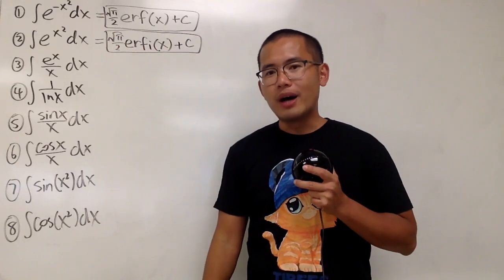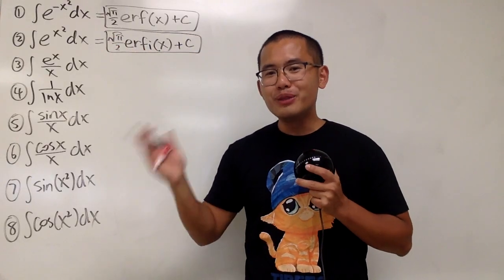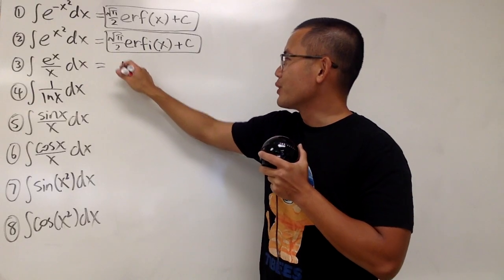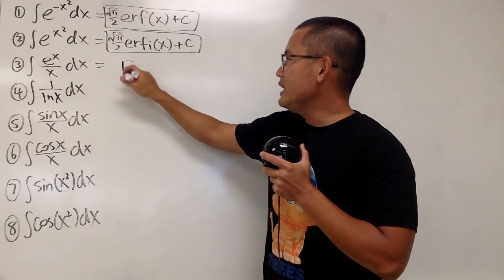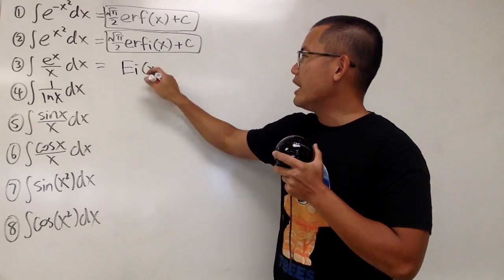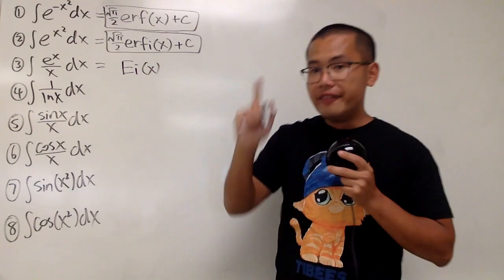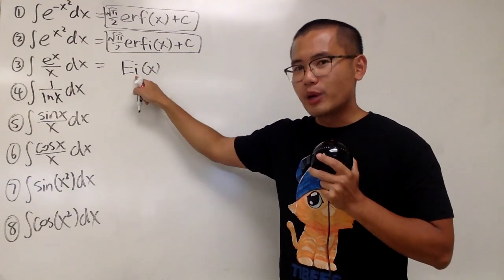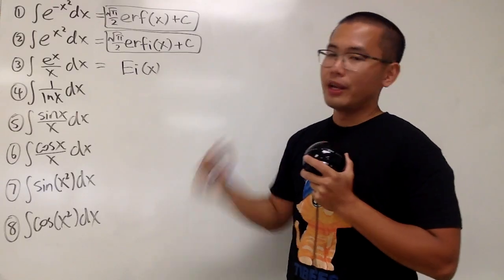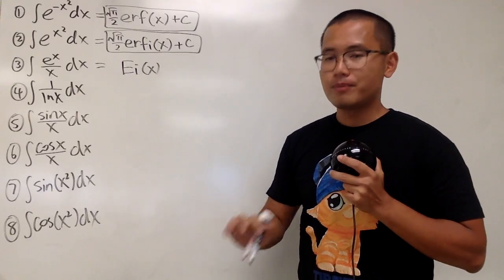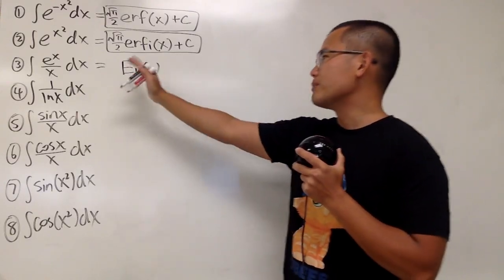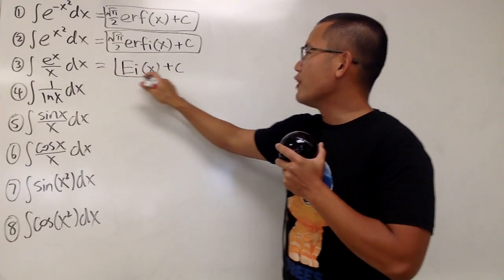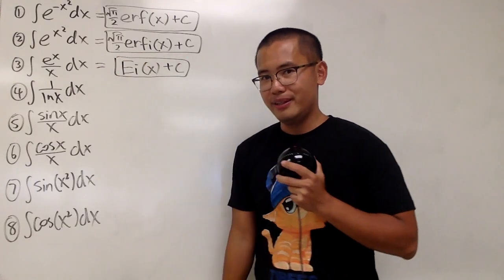Next one: the integral of e to the x over x. For the answer right here, we are just going to write it as Ei of x, namely the exponential integral function, and this right here is the name for that. The input is x. You don't need any constant multiple. This right here is it: Ei of x plus C.